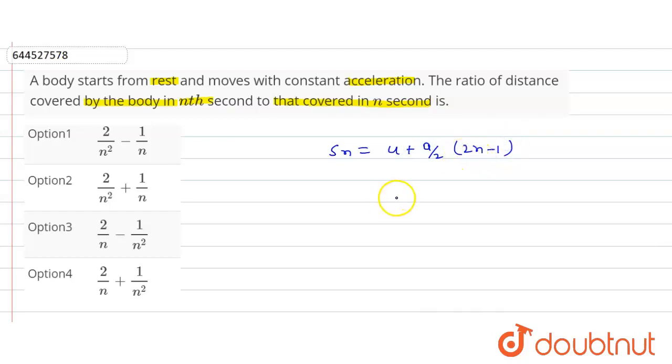And the distance travelled in n seconds, s, is equal to un plus 1 by 2 into an square. So here u is 0 since the body starts from rest.